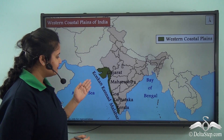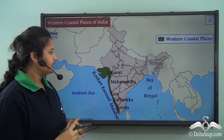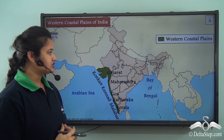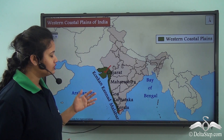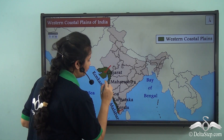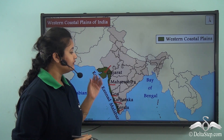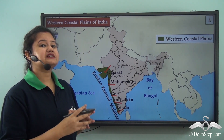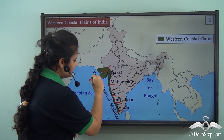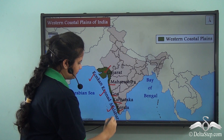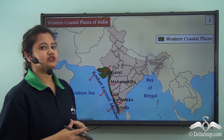The western coastal plain forms the western margin of peninsular India and it stretches from Gujarat to Kerala, also crossing the states of Maharashtra, Goa, and Karnataka. The western coastal plain is quite large and it can be broken into three parts: Konkan, Kanara, and Malabar. These are the three major divisions of the western coastal plains.